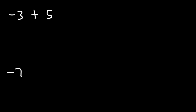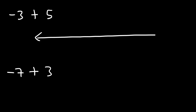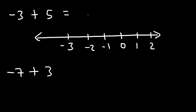So try these two: what's negative 3 plus 5, and what's negative 7 plus 3? For negative 3 plus 5, let's start with negative 3 and travel 5 spaces to the right: negative 2, negative 1, 0, 1, and 2. So negative 3 plus 5 — which is the same as 5 plus negative 3, or 5 minus 3 — is equal to 2.